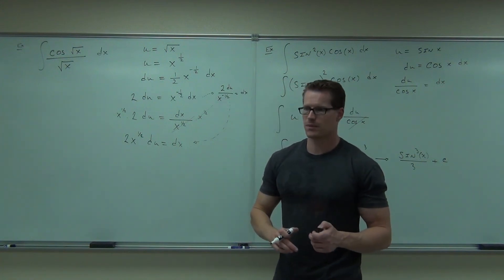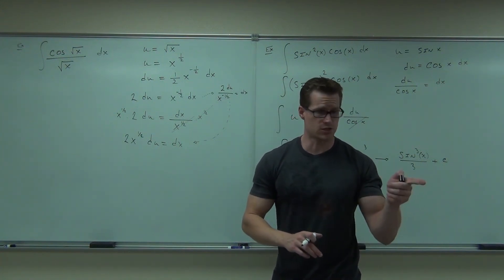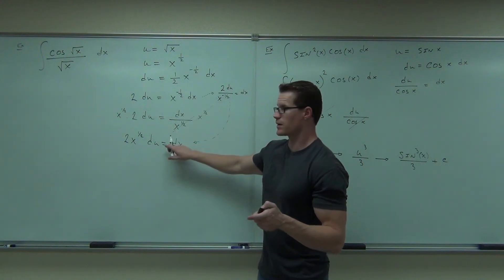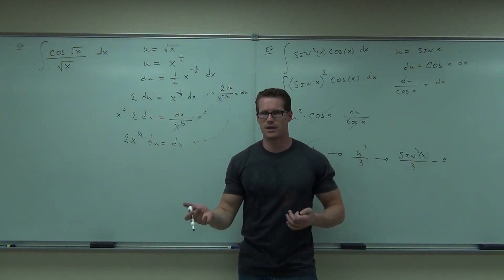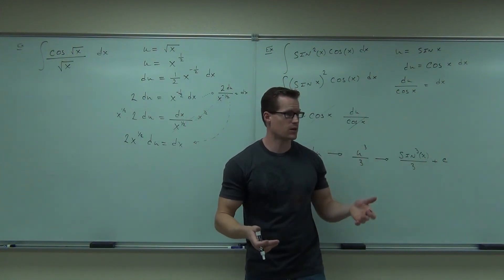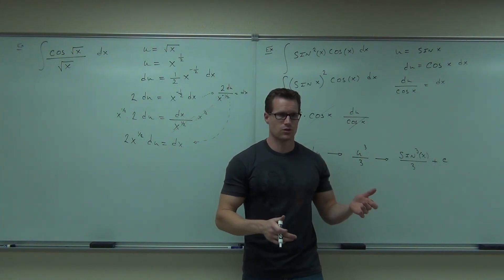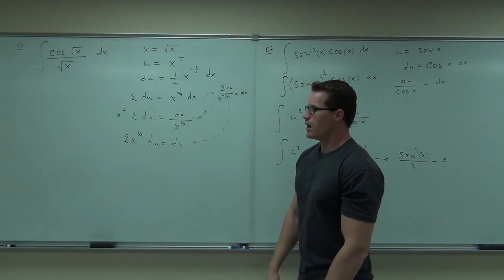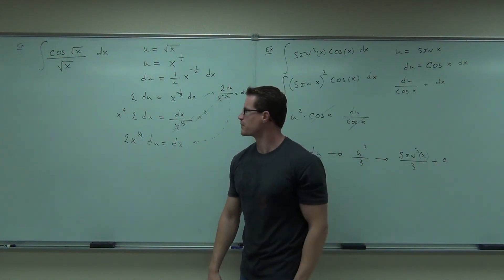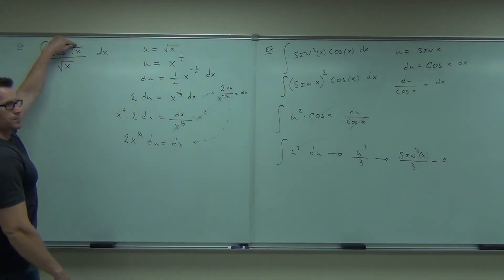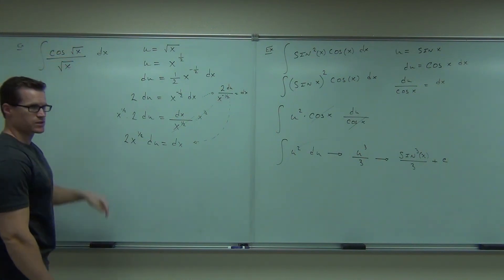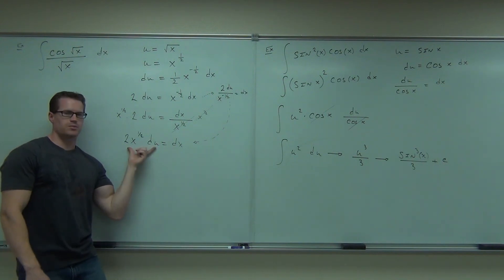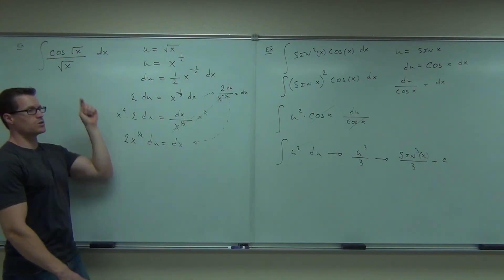I really don't care how you do it — what I care about is whether you can follow the steps and get the right signs in the right places. Calculus is basically basic algebra. Now to answer Scott's question: since I made square root of x into u, do I also make x into u? Well, let's look at your substitution. You have to find a place for this. Notice this has an x — if I make this into a u, watch what would happen.